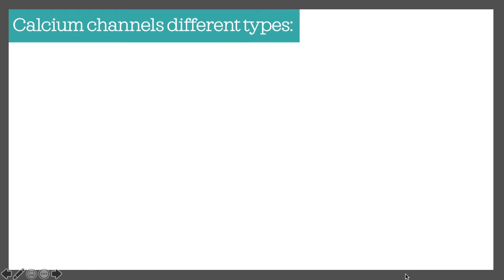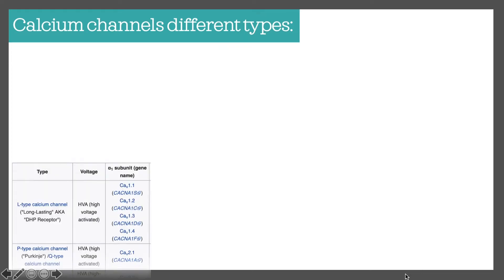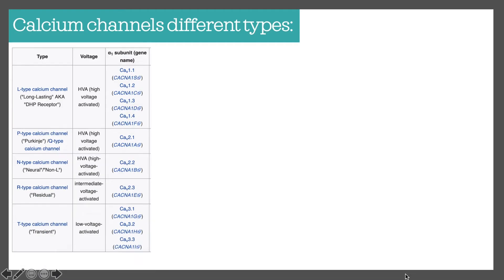There are different types of calcium channels found within the body. This is a screenshot taken from Wikipedia. The main ones are L-type, P-type, N-type, R-type, and T-type as you can see on the screen.